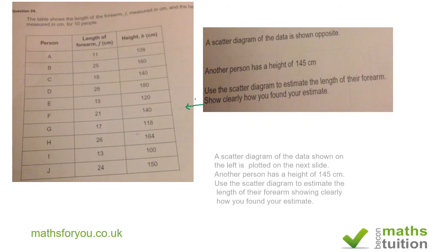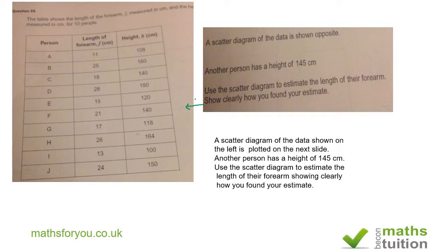The scatter diagram of the data shown on the left is plotted on the next slide. Another person has a height of 145 centimeters. Use this diagram to estimate the length of their forearm, showing clearly how you found your estimate. Where it says showing clearly, that implies that you must draw a line of best fit.